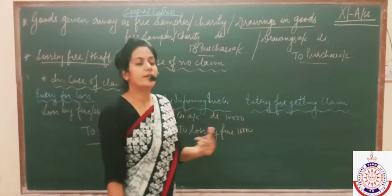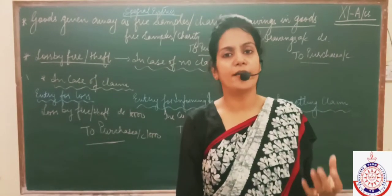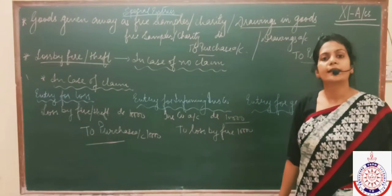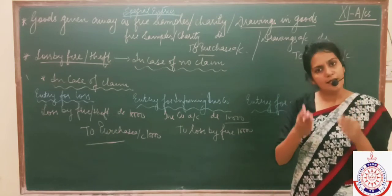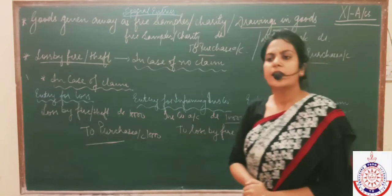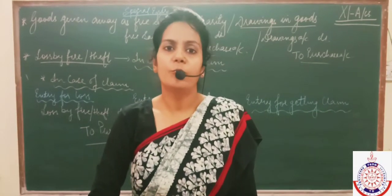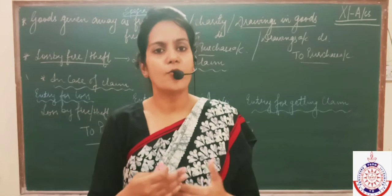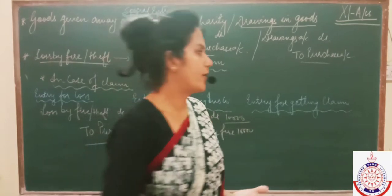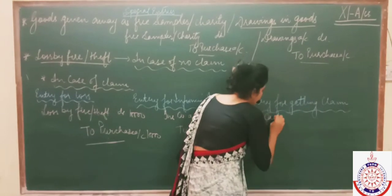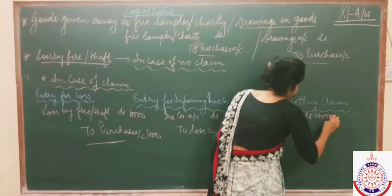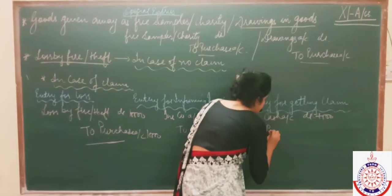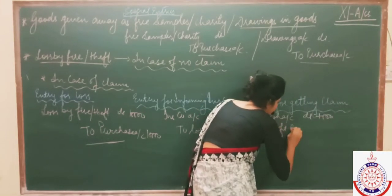Generally, when the insurance company comes to inspect, they inquire about the actual value of the loss. If they feel the reported value is higher than the actual loss, they give you lesser money. For example, if they assess the loss at only 7,000 instead of 10,000, they pay only 7,000 — the remaining 3,000 is your loss that you must bear. That 3,000 will be transferred to profit and loss account. Cash received: 7,000; loss borne: 3,000 — transferred to profit and loss account.